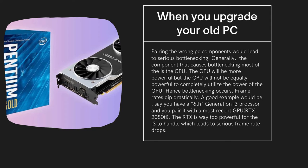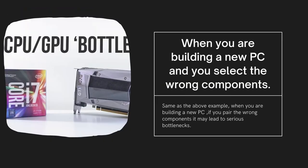A good example would be say you have a 6th generation i3 processor and you pair it with the most recent GPU, the RTX 2080Ti. The RTX is way too powerful for the i3 to handle, which leads to serious frame rate drops. Similarly, when you are building a new PC, if you pair the wrong components it may lead to serious bottlenecks.